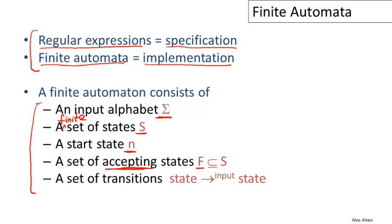Some subset of the states are accepting states. Intuitively, if the automaton terminates after reading some input in one of these states, then it accepts the input; otherwise it rejects the input. Finally, the automaton has some set of state transitions — that is, if it's in one state, it can read some input and go to another state.